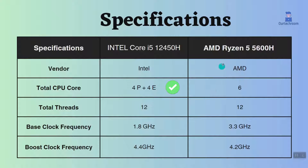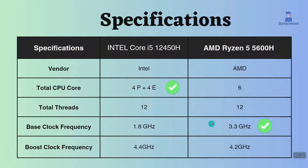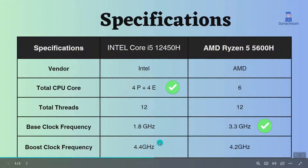The Ryzen 5 5600H runs at a base frequency of 3.3 GHz while the Intel processor is at 1.8 GHz. This means the Ryzen processor can handle tasks faster when the CPU isn't busy. On the other hand, Intel has a higher boost clock frequency, meaning Intel's cores can handle tasks faster when the CPU is working hard, like during gaming or video editing.